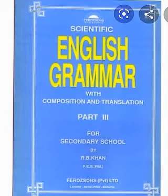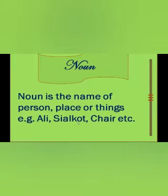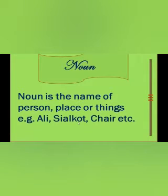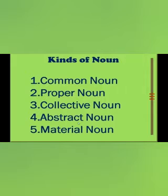Bismillahirrahmanirrahim, Assalamu Alaikum students. Once again I am here with the topic of noun and its kinds from English grammar. Students, noun is the naming word — the name of any person, place, or thing. For example, Ali is the name of a person, Sialkot is the name of a place, and chair is the name of a thing. Generally, noun has five kinds: first common noun, second proper noun, third collective noun, fourth abstract noun, fifth material noun. Let's discuss them one by one.